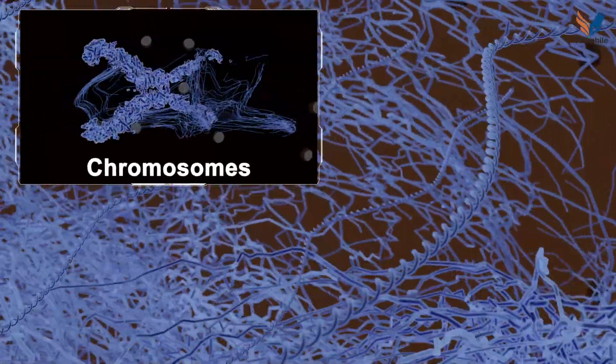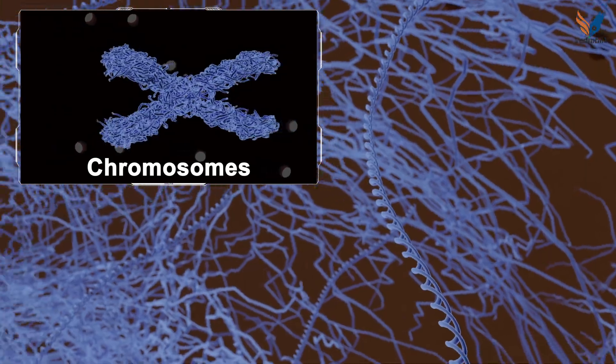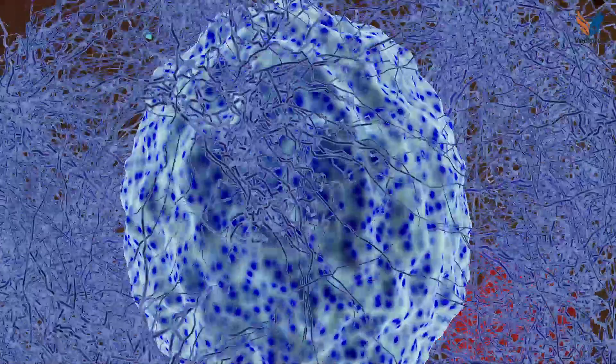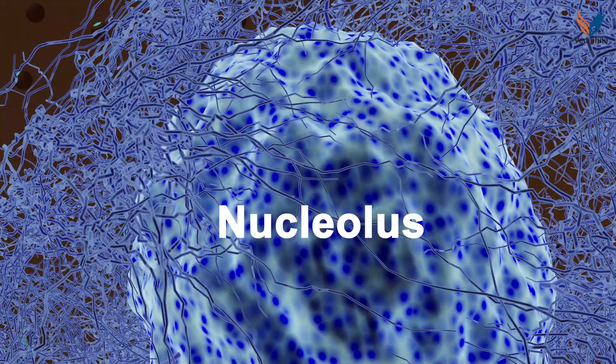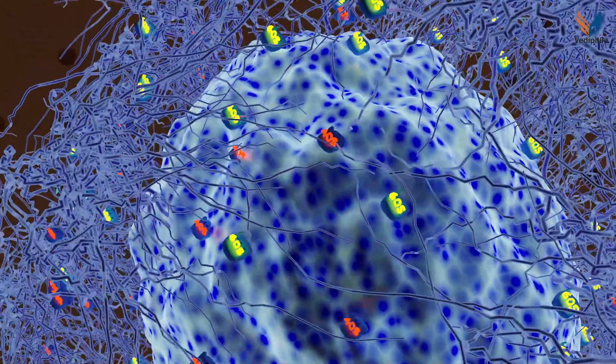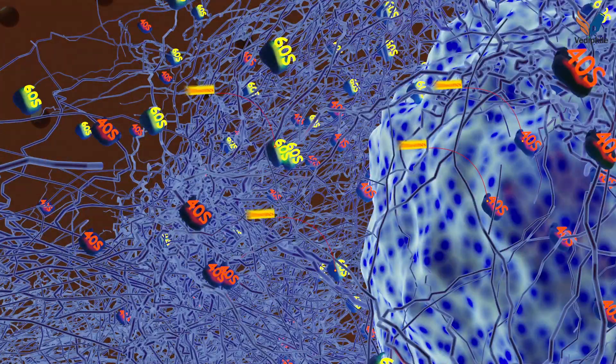Chromatins are condensed and form chromosomes. The nucleolus is present in the nucleus. It takes part in the production of subunits which form ribosomes.